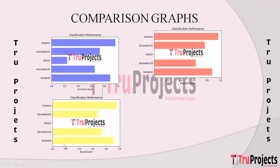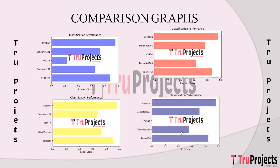A recall score comparison graph shows recall scores on the x-axis and algorithm names on the y-axis. Recall measures the ability to identify all relevant instances, showing how many actual positives were correctly predicted. An F-score comparison graph combines precision and recall into a single metric, balancing accuracy and completeness in predictions. The best-performing algorithm across all performance metrics will be used for predictions.